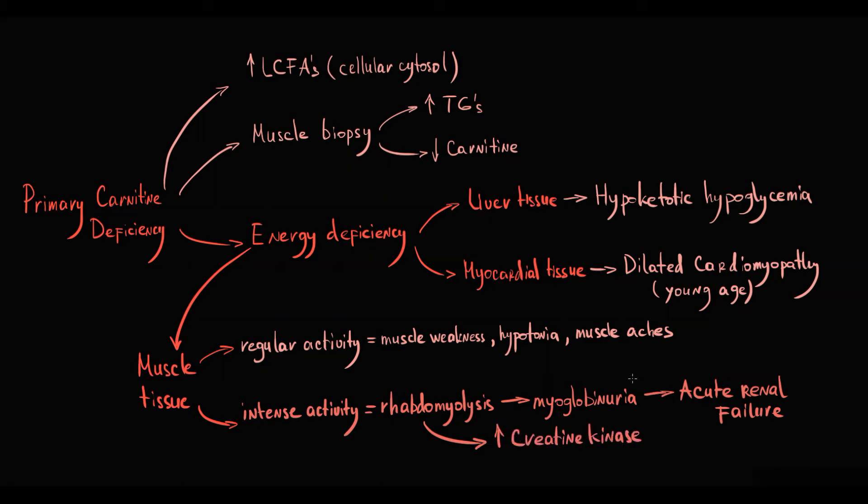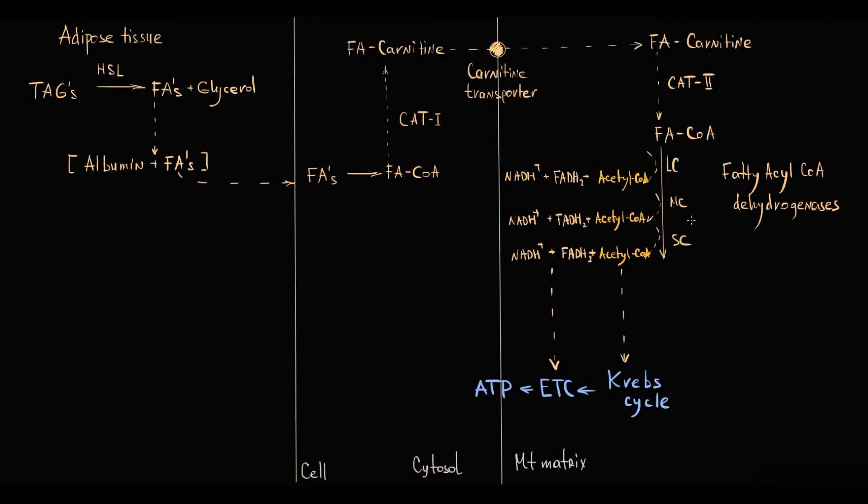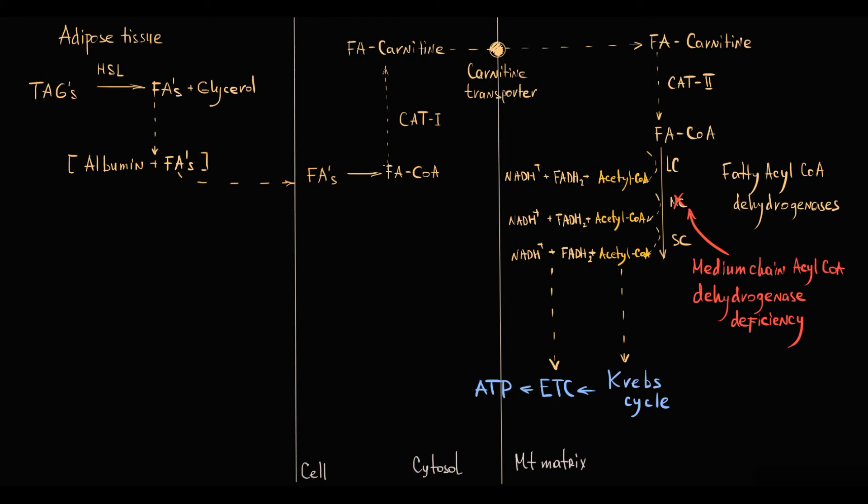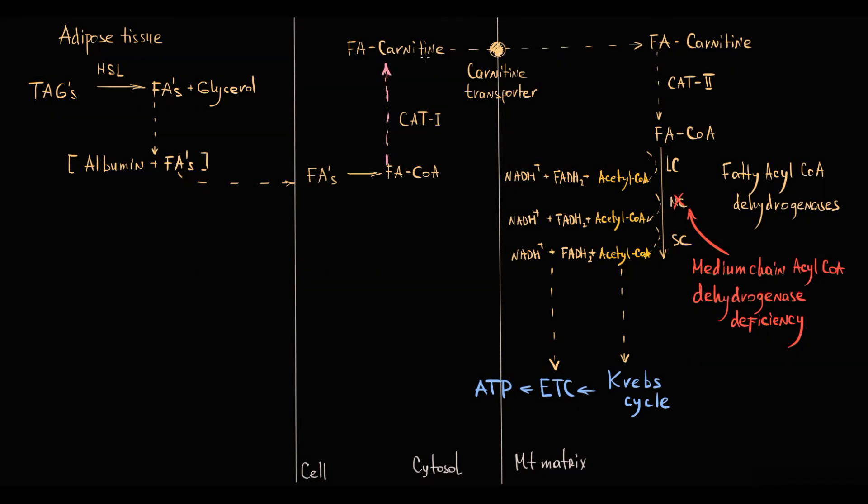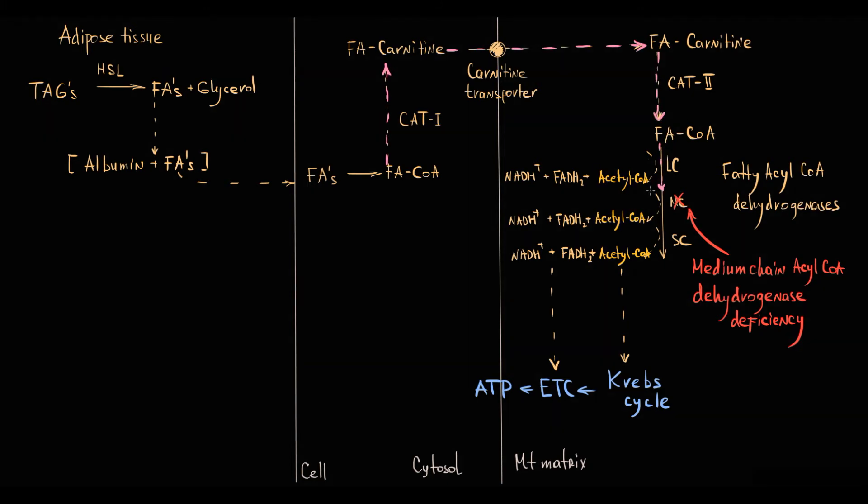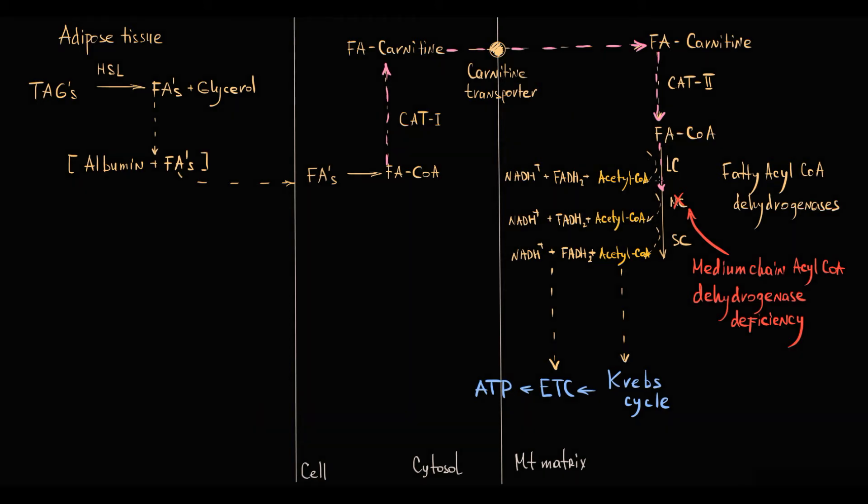The second beta-oxidation defect to know is medium-chain acyl-CoA dehydrogenase deficiency. It is the most common beta-oxidation defect. In contrast to carnitine deficiency, mitochondria is able to uptake long-chain fatty acids and oxidize them. But because medium-chain acyl-CoA dehydrogenase is deficient, fatty acids can be oxidized only to a medium-chain.